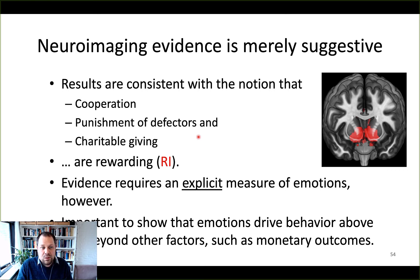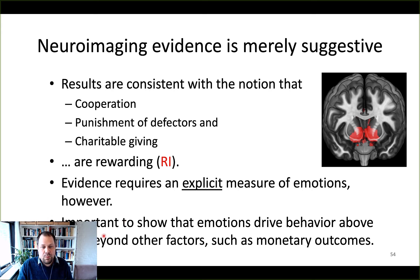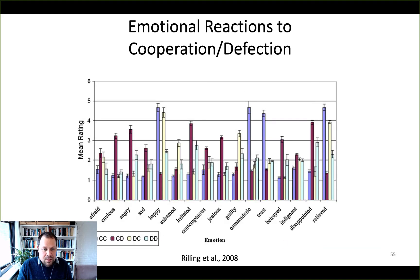But this is still a reverse inference. So if we want to make this conclusion, the evidence requires an explicit measure of emotions and relating this explicit measure of emotions to the neural circuitry. It's important to show that emotions drive this behavior above and beyond other factors such as monetary outcomes. There is already some evidence in the literature that emotions seem to play a role, including the positive emotions felt during the mutual cooperation outcome in the prisoner's dilemma game in a Rilling paper from 2008.